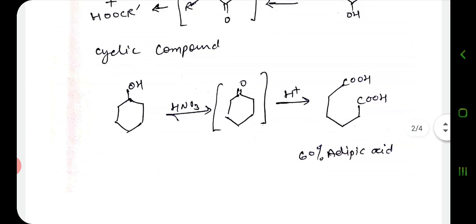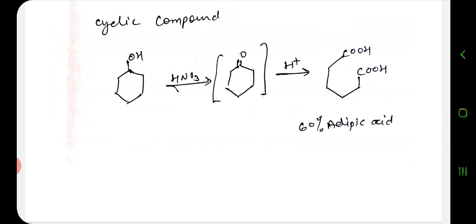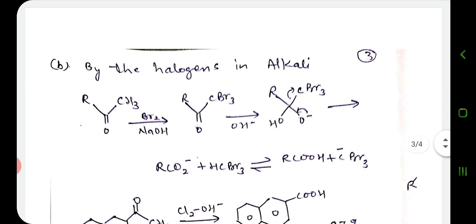If cyclic compounds are present, attack can occur on both sides of the carbonyl group, so a mixture of products is obtained. However, with cyclic ketones, reasonable yields can be obtained. For example, cyclohexanone is oxidized by 50% nitric acid via cyclohexanol as an intermediate, to give adipic acid in 60% yield. Strong nitric acid is used in this case.